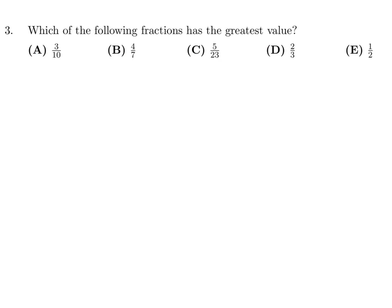Question number 3. Which of the following fractions has the greatest value? If we convert them to decimals it will be a bit easier. The values are 0.3, approximately 0.57, 0.21, 0.67, and 0.5. You can easily tell that the biggest one is 0.67. So number 3, the answer is D.